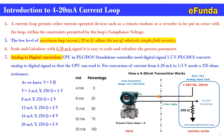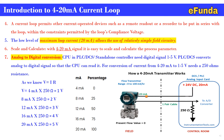This is how the importance of the 4 to 20 milliamp current loop in instrumentation is understood. We hope today's video will help you understand the requirement of 4 to 20 milliamp. Thanks for watching, and with this we are concluding today's topic.